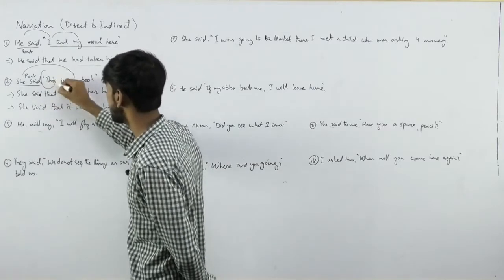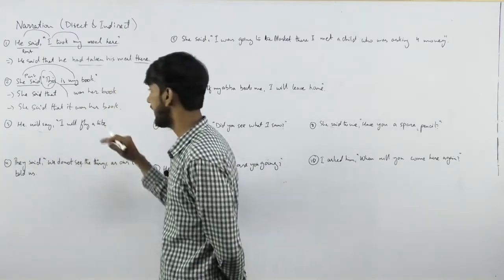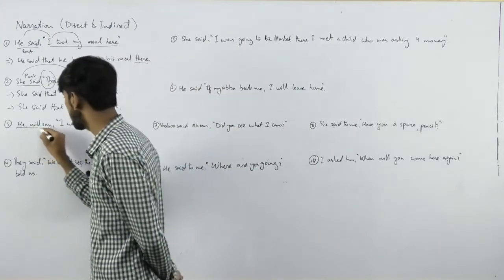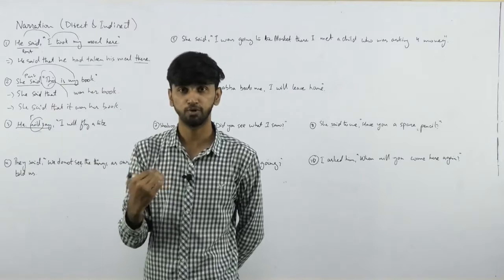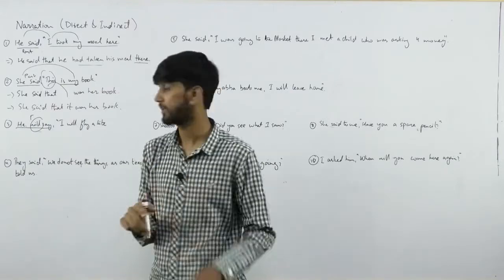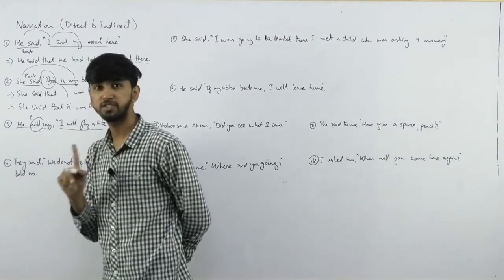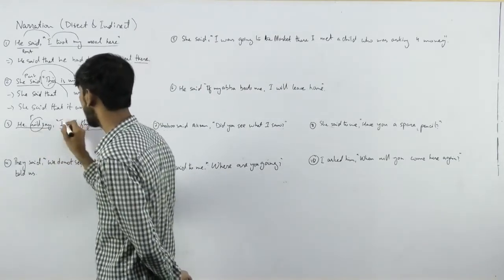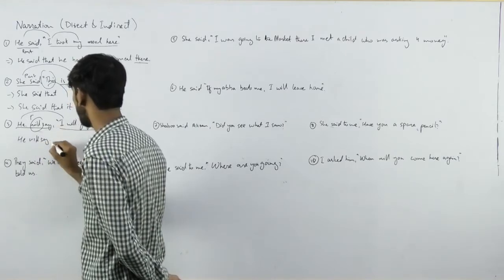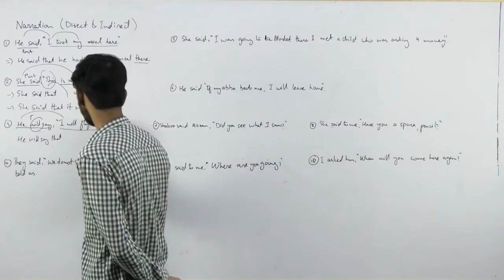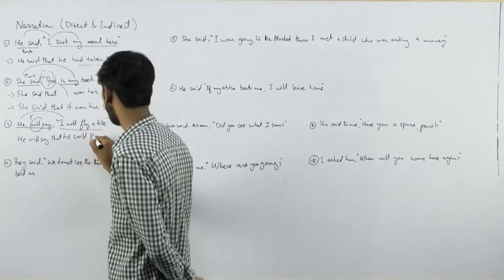After that, he will say 'I will fly a kite.' We have to check the indirect speech and which tense to use. This is future tense. We change the pronoun and tense. Remove inverted commas and use 'that.' Change 'I' to 'he.' He said that he would fly a kite.